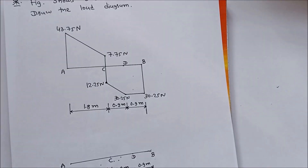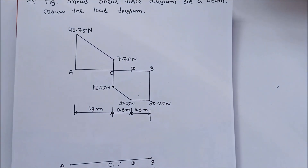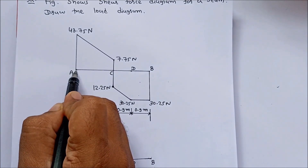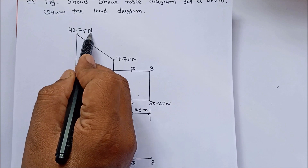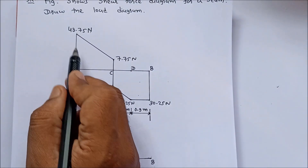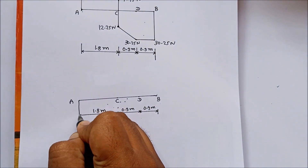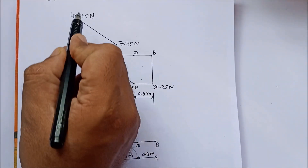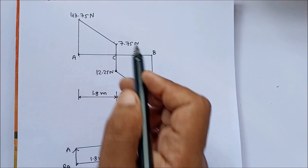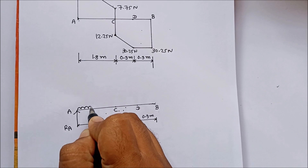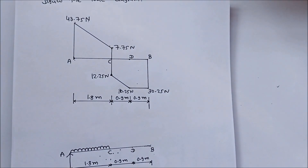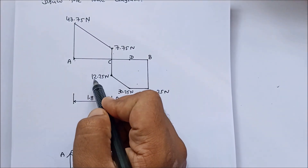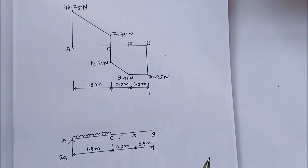Now we solve our numerical. First, identify the supports. If there is a sudden rise in the shear force, there is always a support reaction. From point A there is a sudden rise from 0 to 43.75 N, so there is a support and reaction at point A. Between points A and C there is an inclined line, so there is a UDL between A and C. At point C the shear force decreases from 7.75 N to minus 12.25 N, indicating a point load at C.